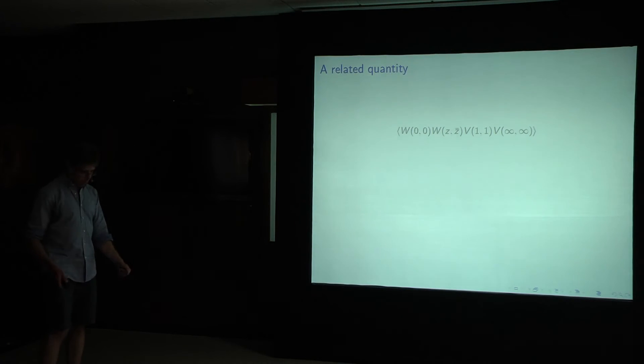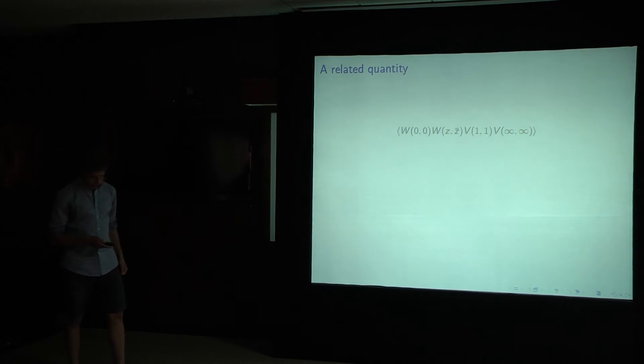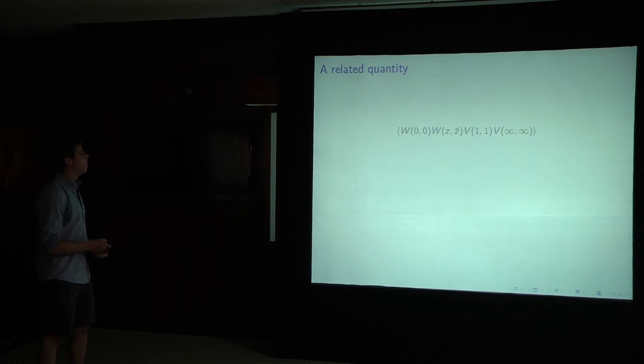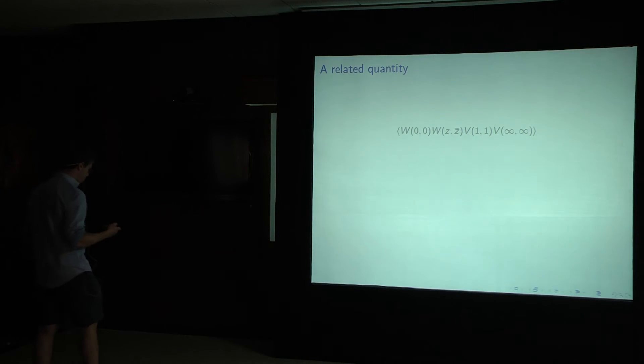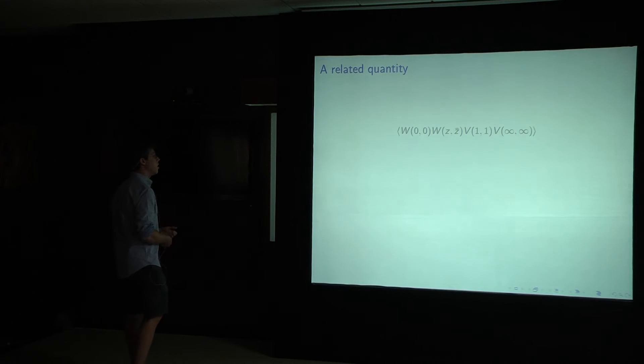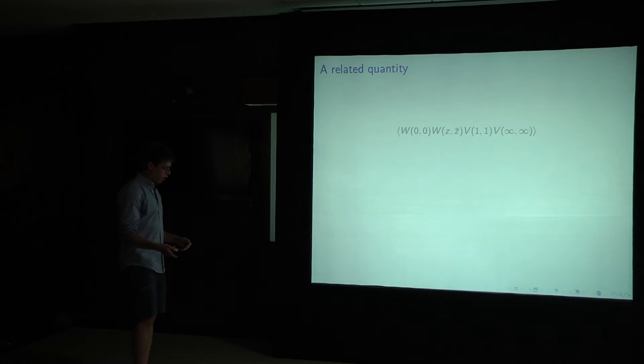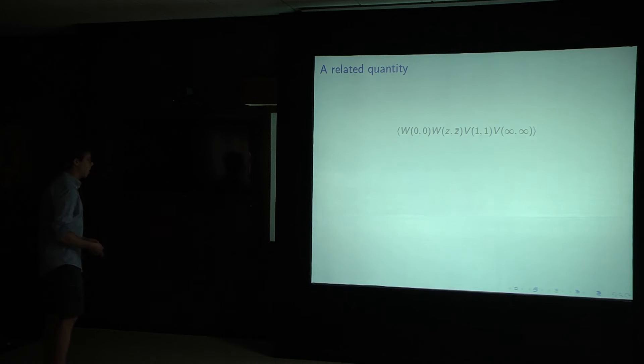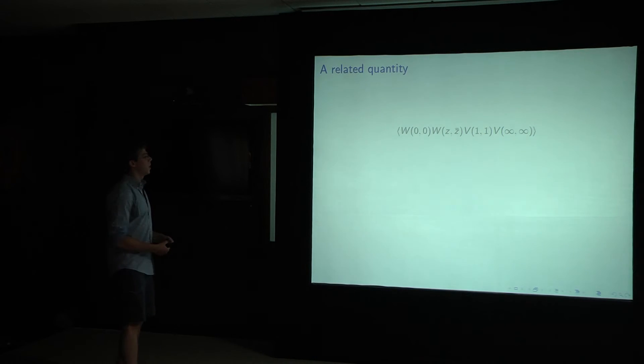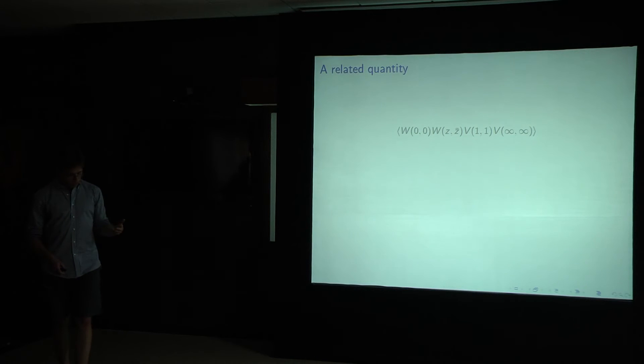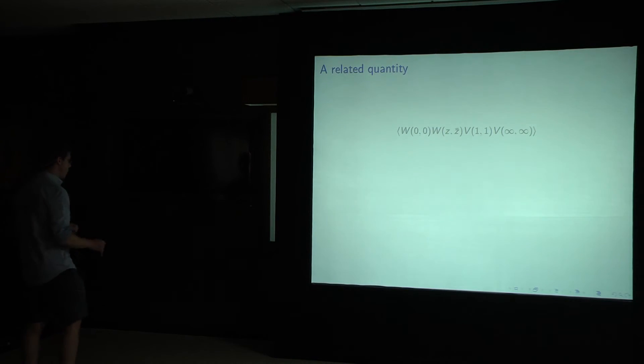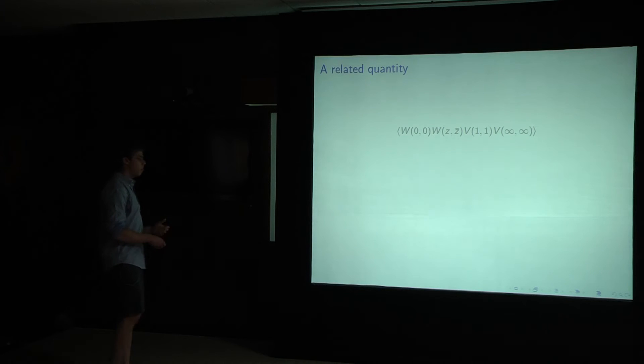In order to compute these four point functions, I want to consider a related quantity, which is the Euclidean four point function on a plane. The Euclidean four point function is defined when the conformal cross ratios z and z bar are related by z bar is equal to the complex conjugate of z, or z star. But, and all Wightman functions are analytic continuations of each other. And so what we'll do is we'll analytically continue this to independent z and z bar. And when we do that, holding z bar fixed, for instance, there's a branch cut in the complex z plane running from the insertion of the w operator, the v operator at one, to the v operator at infinity.